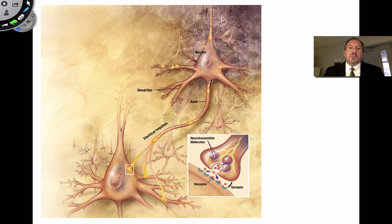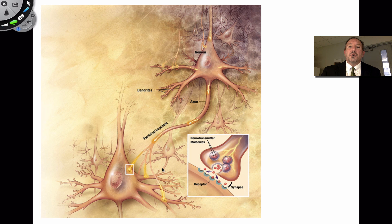In this diagram you can see a nerve impulse coming from one neuron to the next. Looking at the close-up, in the axon terminus you can see neurotransmitters being released and picked up by the dendrites of another neuron. Nerves can talk to other nerves this way. Nerves can talk to muscles and cause them to contract by releasing certain neurotransmitters, and nerves can talk to glands to make them release certain hormones.